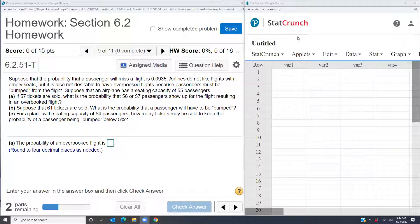Suppose that an airplane has a seating capacity of 55 passengers. If 57 tickets are sold, what is the probability that 56 or 57 passengers show up for the flight resulting in an overbooked flight?